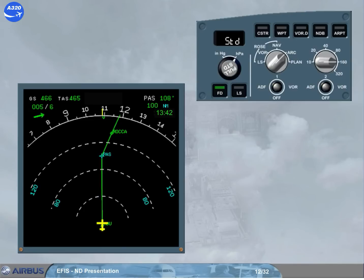The display range can be adjusted using the range selector. You can now see more of your flight plan, and that the range values have changed accordingly. Let's study the ND individual modes.